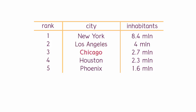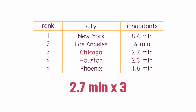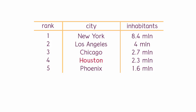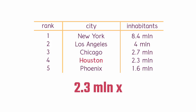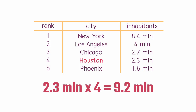Chicago is the third largest city and has 2.7 million inhabitants, and if you multiply that by its rank — 3 — you will get 8.1 million, again pretty close to the population size of New York. Houston is at 2.3 million, and if we multiply that number by the city's rank, we have 9.2 million, which is overshooting a bit, but not too bad.